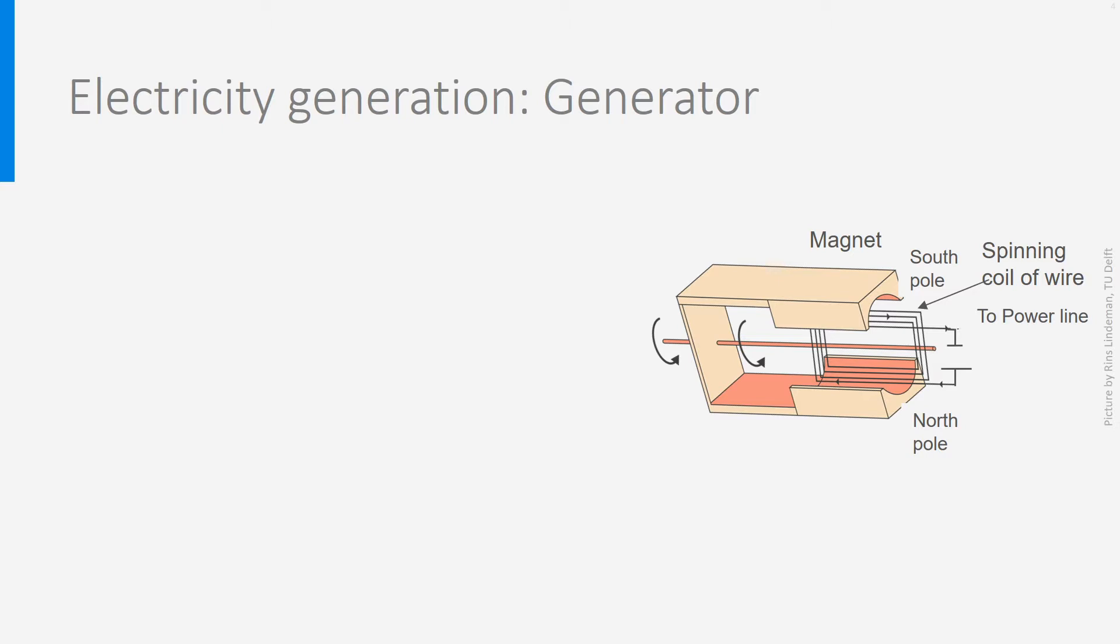You see in the picture the magnet with its two poles, north and south, surrounding the wire. The wire rotates, and therefore moves, so electricity is induced. So, you need only three things.